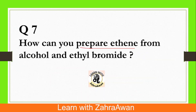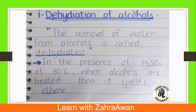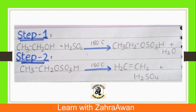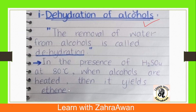Question number 7: How can you prepare ethylene from alcohol and ethyl bromide? There are two methods. The first method is dehydration of alcohol, which means removing water molecules from alcohol. When we treat alcohol with sulfuric acid (H2SO4) at 180 degrees centigrade, we get ethyl hydrogen sulfate. In the second step, water is removed from ethyl hydrogen sulfate, giving us ethylene.